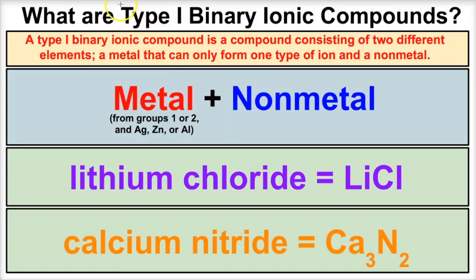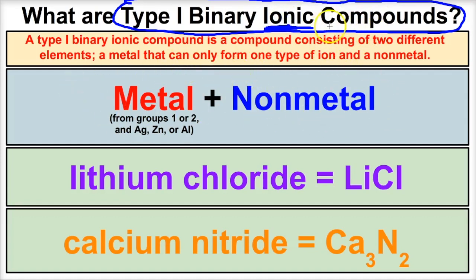So what is a type 1 binary ionic compound? Let's break this down. First of all, we learned in an earlier video that a compound is two or more different elements chemically bonded together. And what does it mean to be ionic? Anytime you're ionic, you're going to have a metal bonded to a non-metal. So we have a compound, one of which is a metal and one of which is a non-metal. And the fact that it's binary — the prefix bi- just means two — so we have a compound that consists of two different elements.